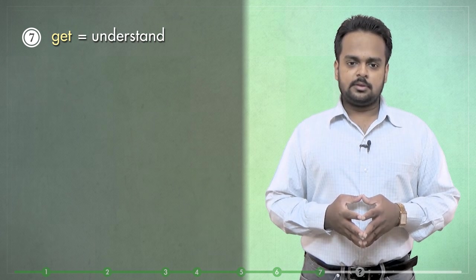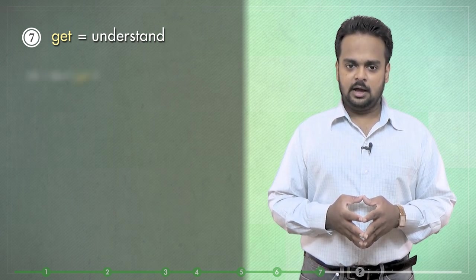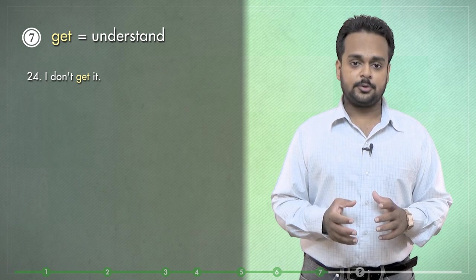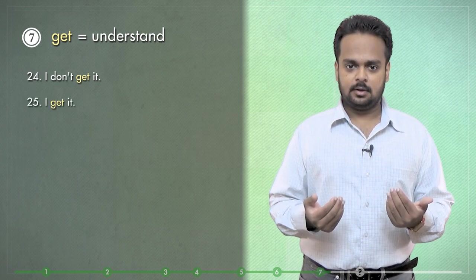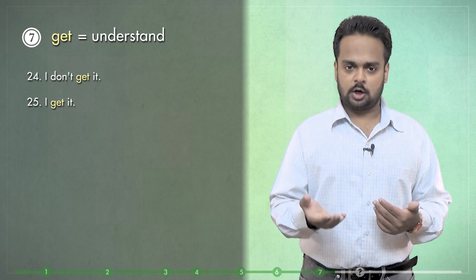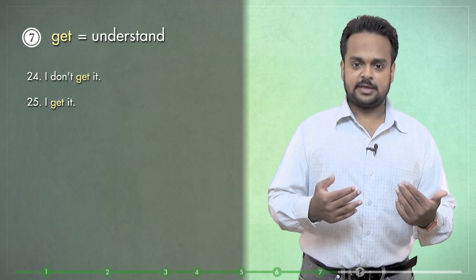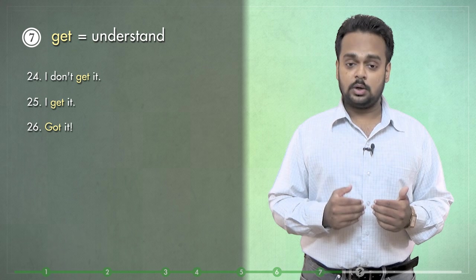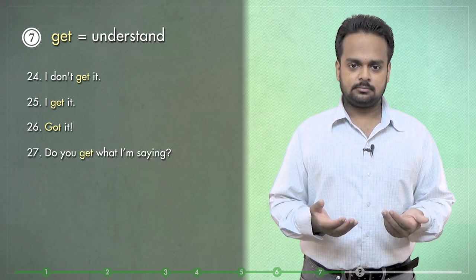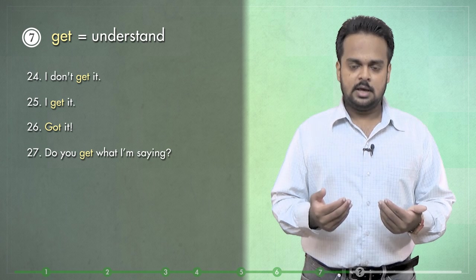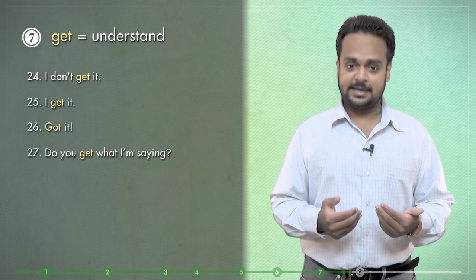and the final use of the verb get is to mean understand. Probably the most common expression in this meaning is, I don't get it. This is an informal way of saying, I don't understand it. Another popular expression is the opposite – I get it. It means I understand it. Or if someone like your boss gives you an instruction like, send me the report by tomorrow, you might say, got it. It's short for I've got it, meaning I have understood it. A related expression is, do you get what I'm saying? This is also informal and it's just a way of asking, do you understand what I'm saying? These are all useful expressions that you can use in conversation.